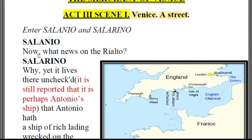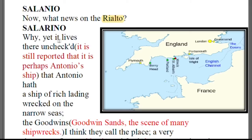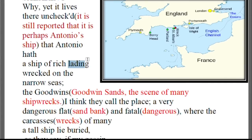The Rialto is a place where all the business dealings and transfer of money used to take place. This is a story about merchants who used ships to transport goods to different countries. Salarino replies that the news is still the same — a ship has wrecked in the English Channel, and they suspect it must be Antonio's ship, which was a ship of rich lading.